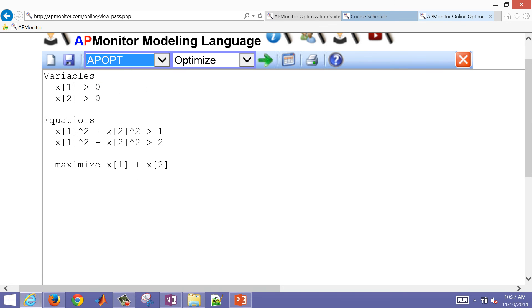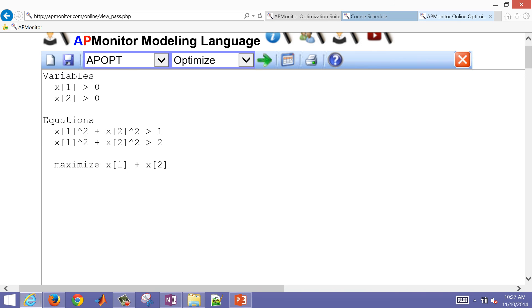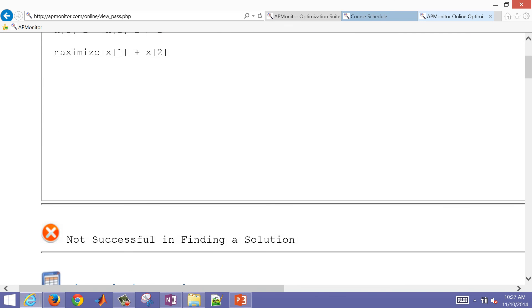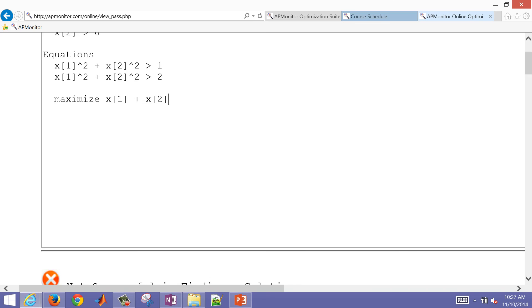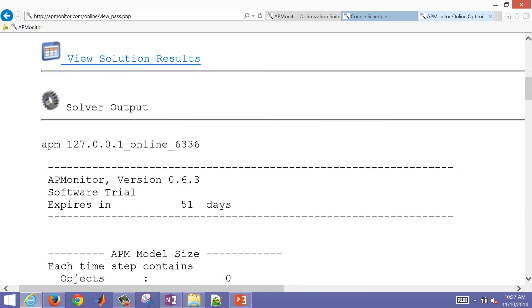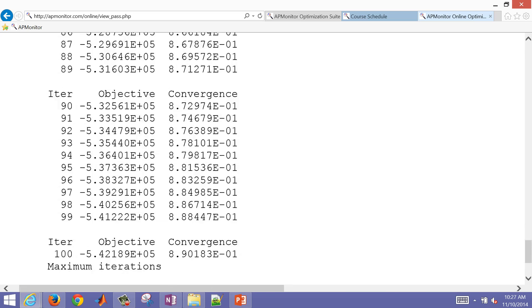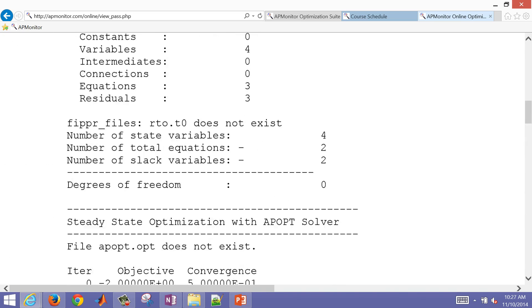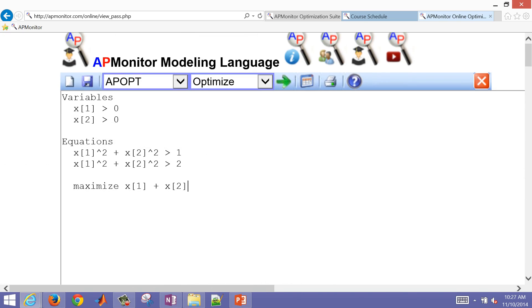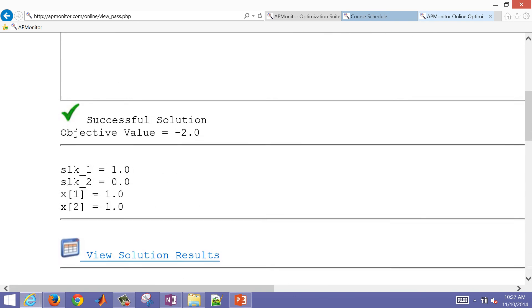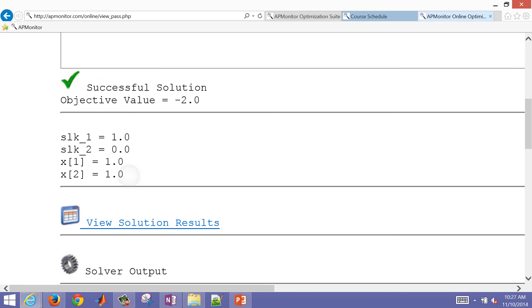So there are different solvers we can use. I'm just going to try the APOPT solver and click the green button here. Let's see. Oh, I made a mistake. It said that this one was probably unbounded. It went up to many iterations and the reason why is because it went to infinity. But I need to change this to less than two instead of greater than two. Let me optimize one more time.